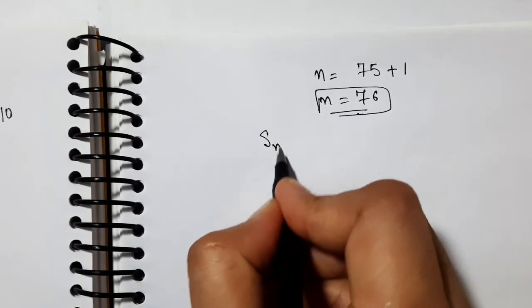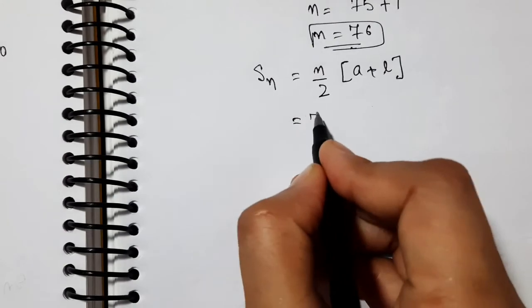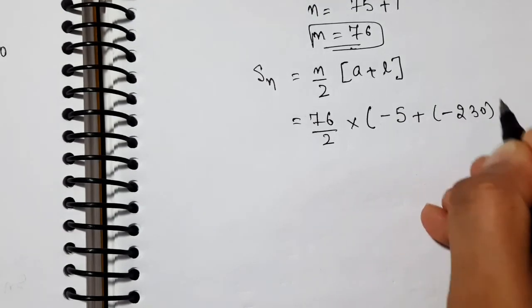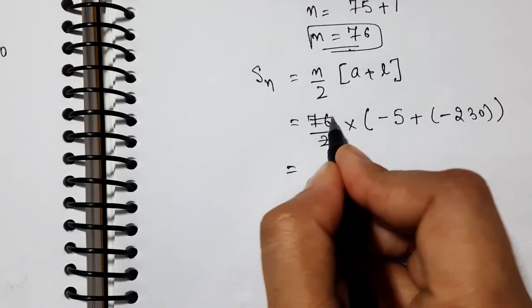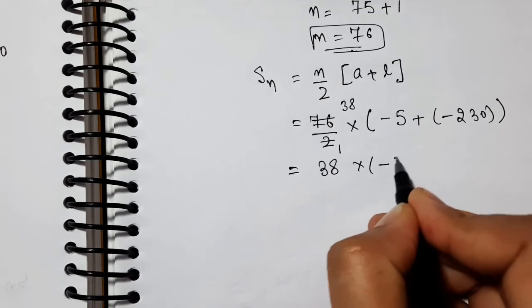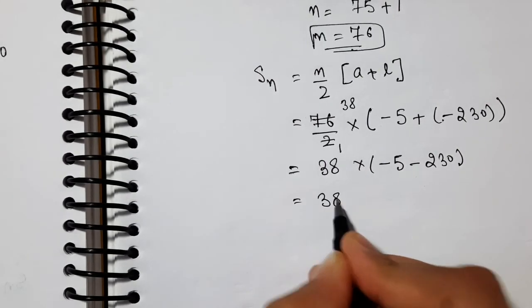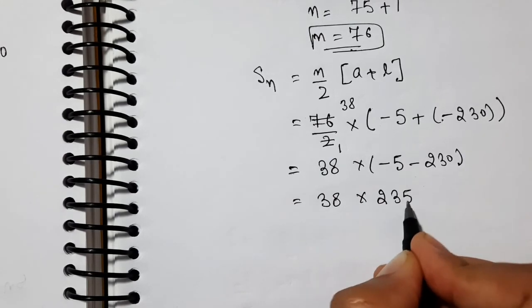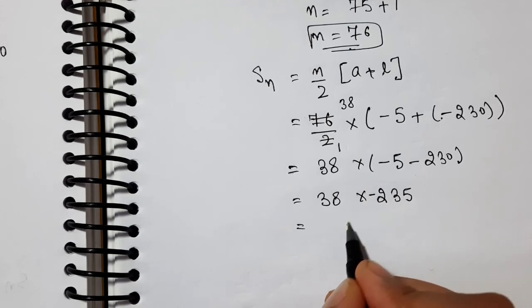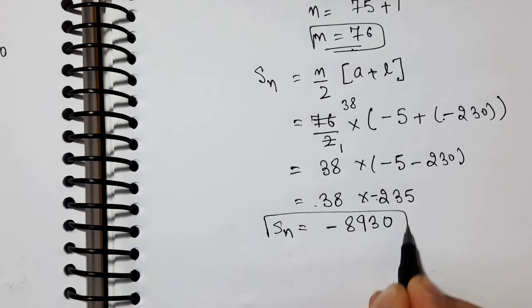So n came to us. Now apply the S_n formula. S_n equals n by 2 times (a plus l). Applied the formula for first term plus last term. We can also apply the other one, your answer will come the same. So here n value is 13, 13 by 2, a is 34, and last term is 10. Solving these: 13 by 2 times, adding these two gives us 44. Cutting is possible here - 2 ones are 2, 2 twenty-twos are 44.